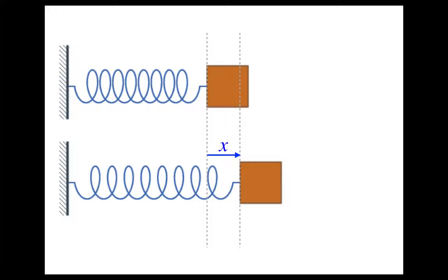In the second position, there will be a force acting on the mass. From Hooke's Law, you know that the force will be equal to negative kx. Newton's second law tells us that force is equal to mass times acceleration, so let's make that substitution.